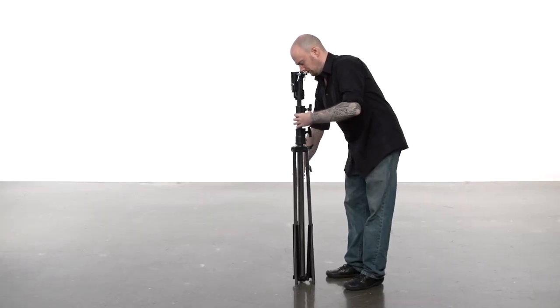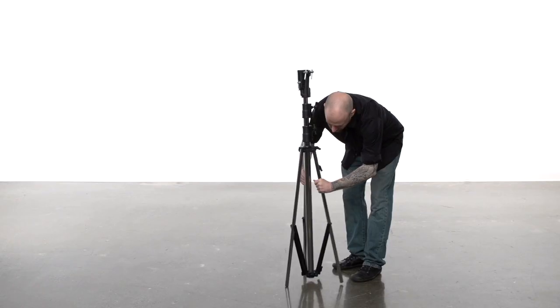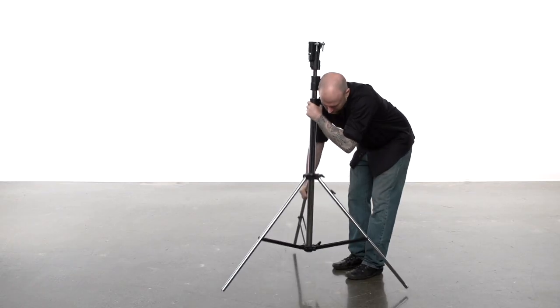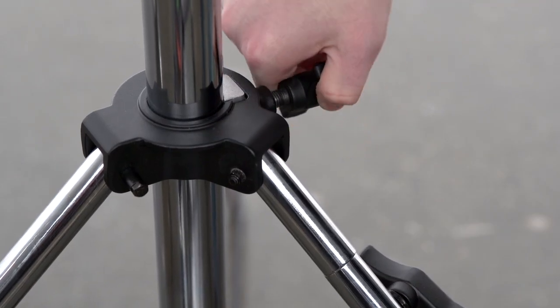To open the stand, turn the knob located at the top casting where the legs meet the stand. Grab two legs and pull apart until the braces are parallel with the floor. Turn the same knob clockwise until snug. Now you're ready to mount your lighting fixture.